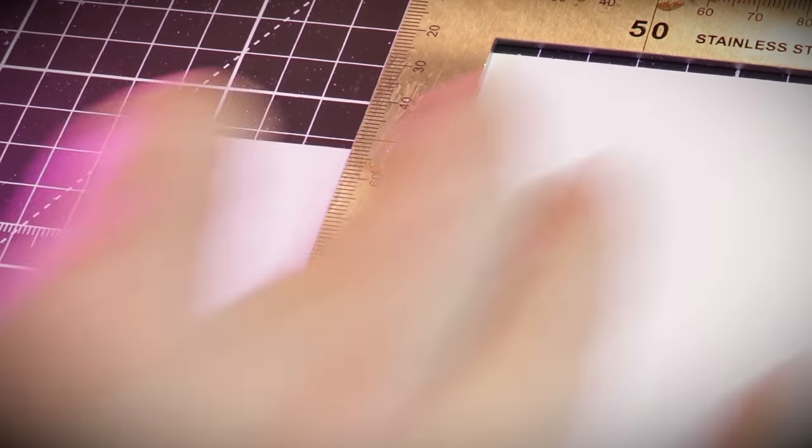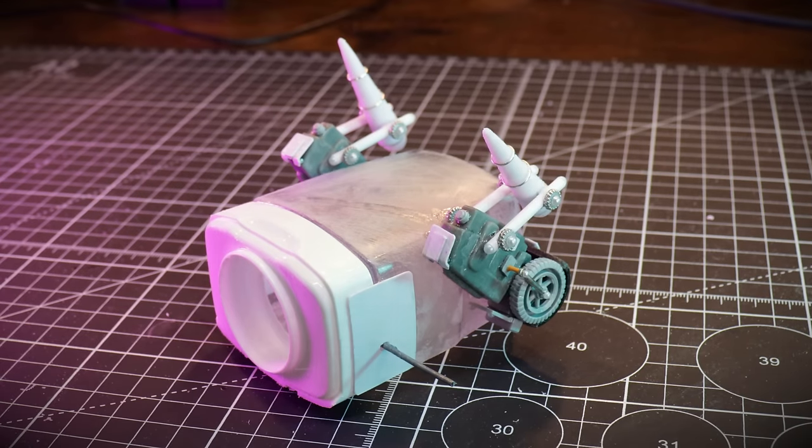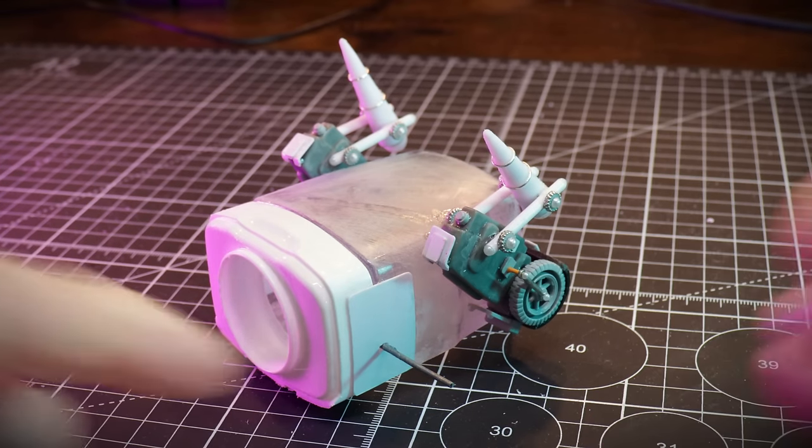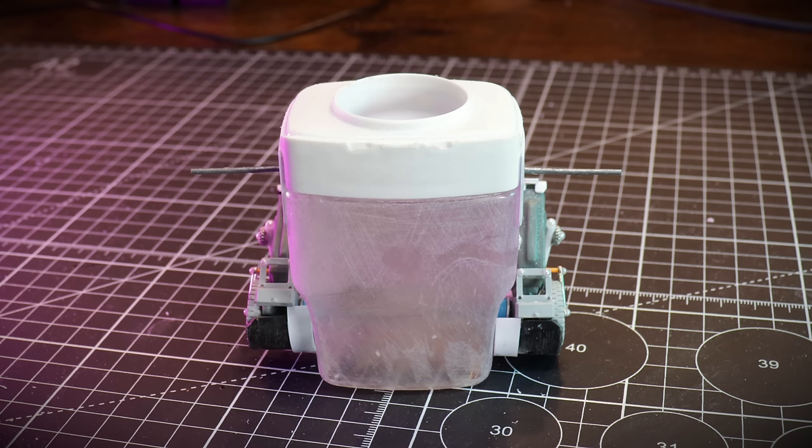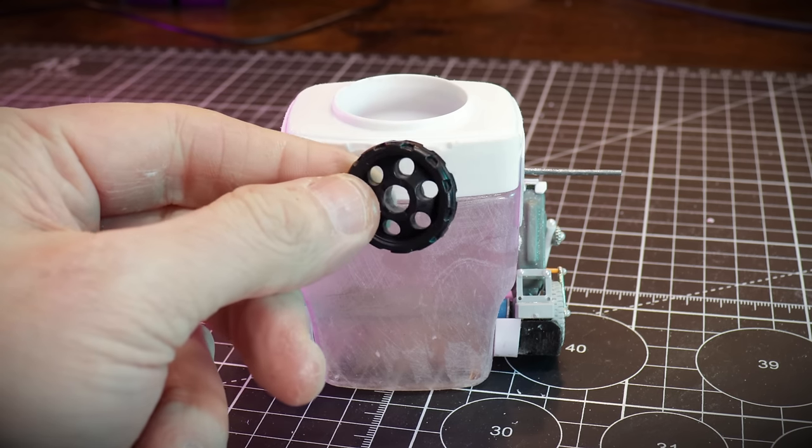And now it's time to break out the plastic card and just add a few panels here and there. No EVA foam this time. The scale I'm going for, I want thinner sheets of metal. So I've gone for plastic card.